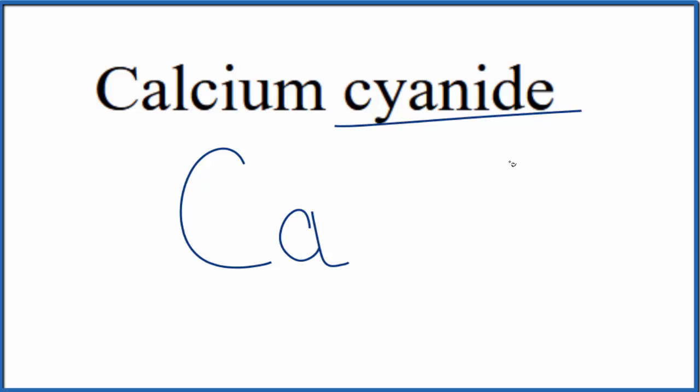For cyanide, you won't find this on the periodic table - this is a polyatomic ion. So you either memorize that the cyanide ion is CN and the whole thing has an ionic charge of 1 minus, or if you're allowed, you look it up on a table of polyatomic ions.